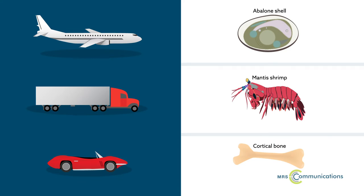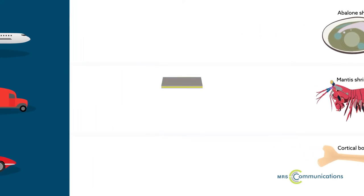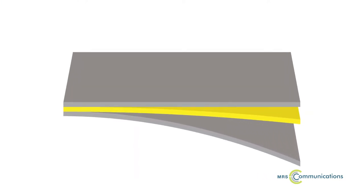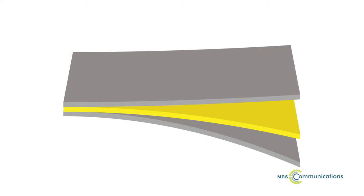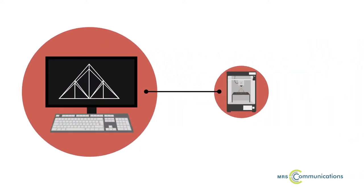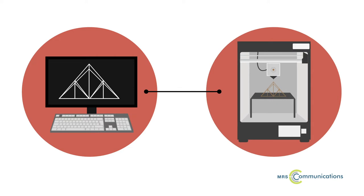Limitations in manufacturing methods have generally restricted the architecture these materials take on in real-world applications. Most commonly, they're processed into multi-layer sheets. But with advances in techniques such as 3D printing, composites can take on entirely new and complex shapes.